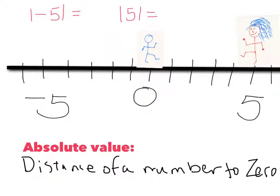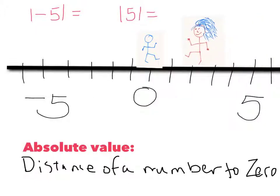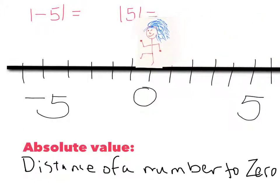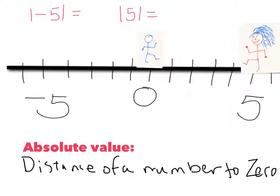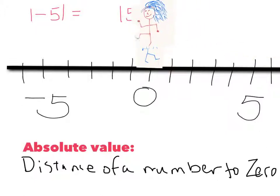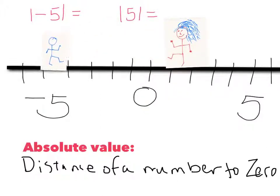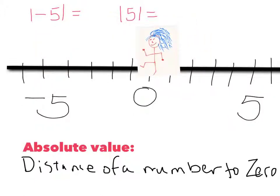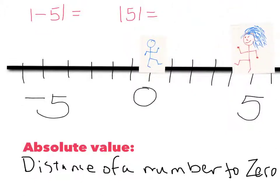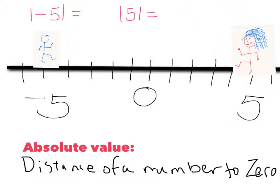Your friend walks 1, 2, 3, 4, 5 units as well. Your friend was at 5 and walked 5 units to get to 0. You were at negative 5 and you walked 5 units to get to 0. So that demonstrates the idea of absolute value: the absolute value of negative 5 is 5, because negative 5 is 5 units from 0.